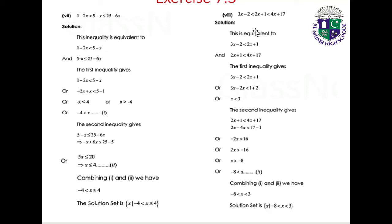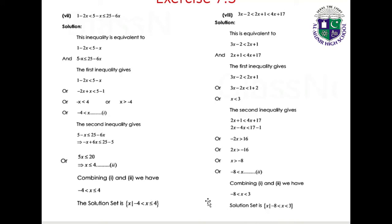Part 8: 3x minus 2 less than 2x plus 1 less than 4x plus 17. First inequality: 3x minus 2x less than 1 plus 2, giving x less than 3. Second inequality: 2x plus 1 less than 4x plus 17, giving minus 2x less than 16, so x greater than minus 8. Combining: minus 8 less than x less than 3. Solution set: {x | -8 < x < 3}.